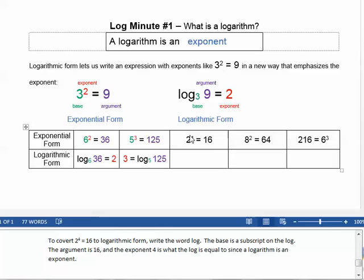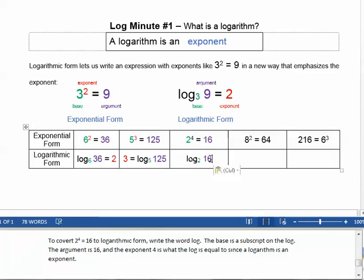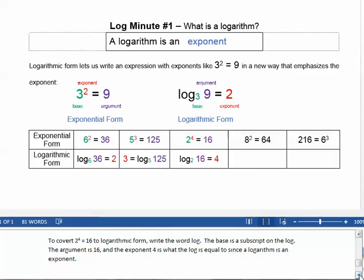To convert 2 to the 4th equals 16 to logarithmic form, write the word log. The base is a subscript on the log. The argument is 16 and the exponent, 4, is what the log is equal to since a logarithm is an exponent.